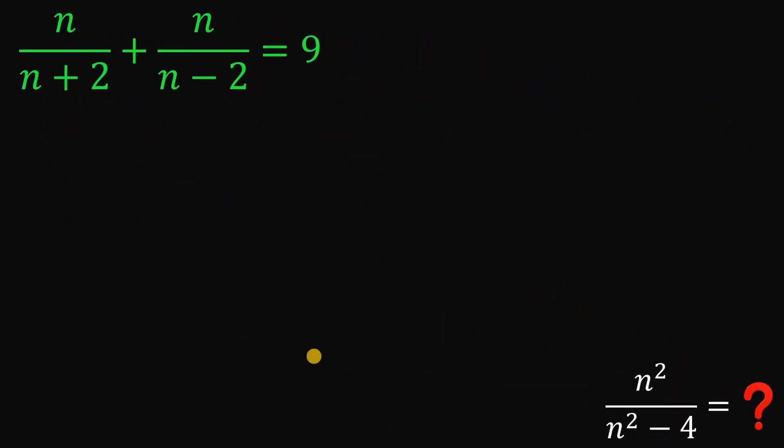To answer this question, I will show you a simple trick. What is this trick? Let's let this n over n plus 2 be equal to x and n over n minus 2 be equal to y. Here's the simple purpose. Because our original equation now becomes x plus y equals 9.